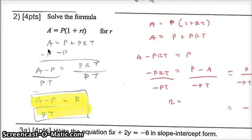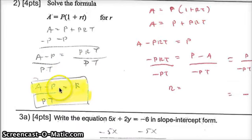One of the ways is you can distribute the P. So P times 1 is P. P times RT is PRT. Notice here the R. So you can subtract P from both sides. This will equal 0. So you have A minus P equals PRT. Notice when the letters are next to each other, that's multiplication. So you can divide both sides by PT. And you get R is equal to A minus P over PT.